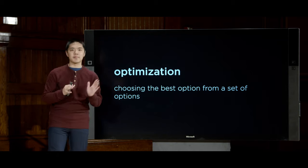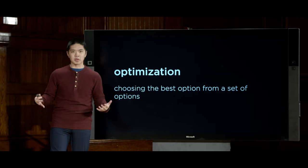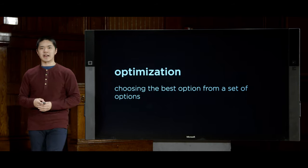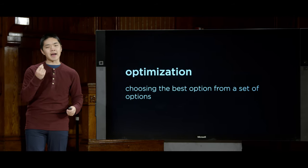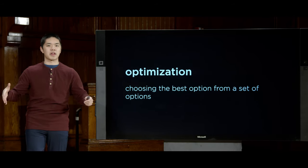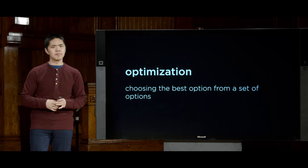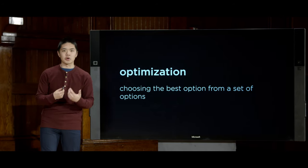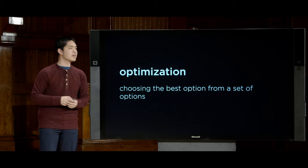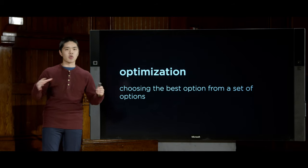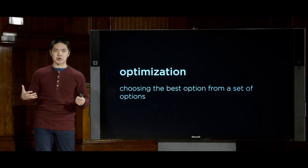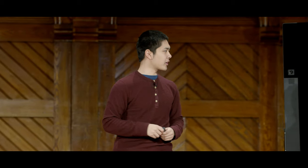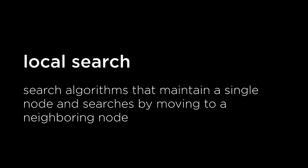Today, we're going to turn our attention to another category of problems, generally known as optimization problems, where optimization is really all about choosing the best option from a set of possible options. We've already seen optimization in some contexts, like game-playing, where we're trying to create an AI that chooses the best move. But today we'll look at a broader range of potential optimization problems.